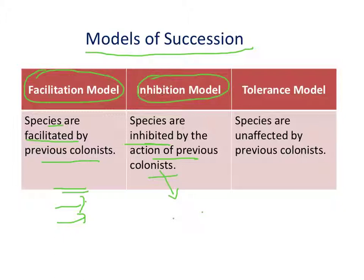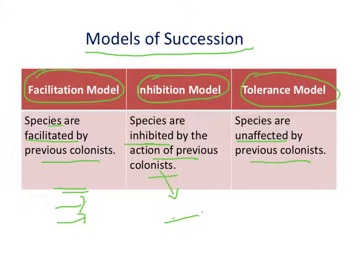We'll talk more about how inhibition can function within successional processes. In the tolerance model, species are unaffected by the previous colonists. So all three models depend on what the previous colonists are doing: are they facilitating — making it easier for the next species? Are they inhibiting — making it harder for the next species to come in? Or are they not influencing the next colonists at all?